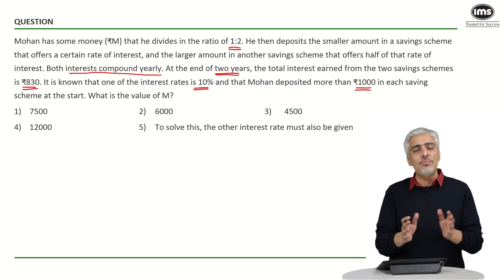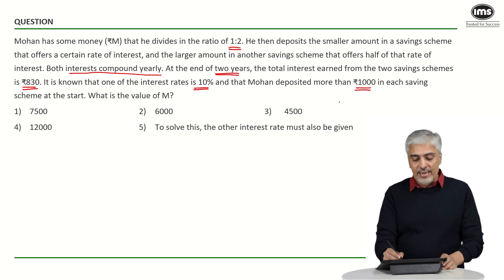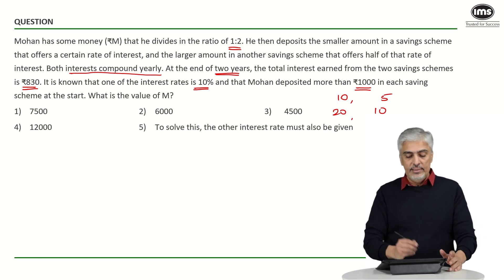Let us start by saying I am just going to try and understand which interest rates will it be possible. So, there are two possibilities. That means one of the interest rate was 10 and the second was 5% or it was 20 and 10. These are the two possibilities. Think logically. They have said in scheme 2 the interest rate was exactly half of scheme 1. That is what they have said.